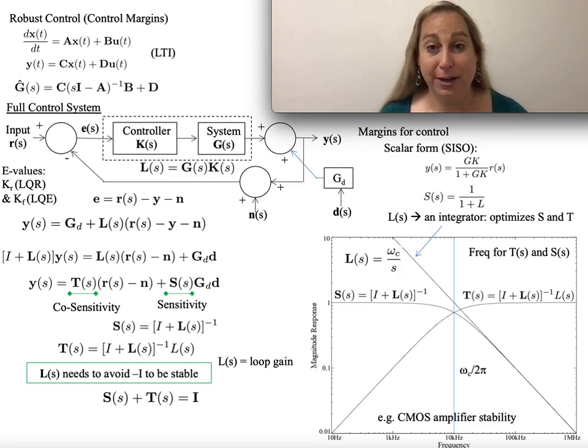So in this discussion I want to talk about making the jump to robust control to where we actually have margins for things that might happen.